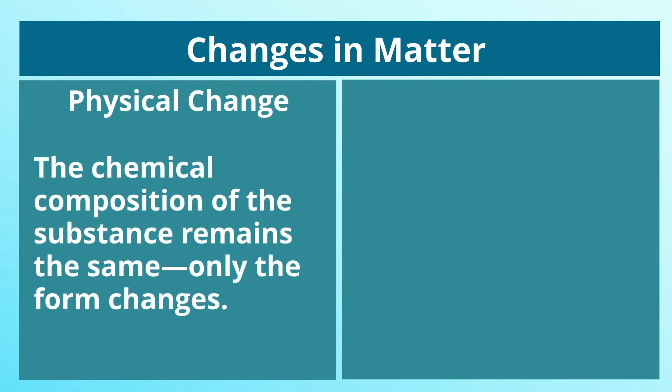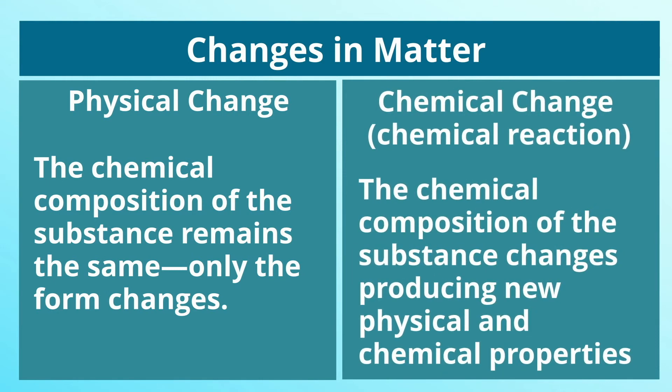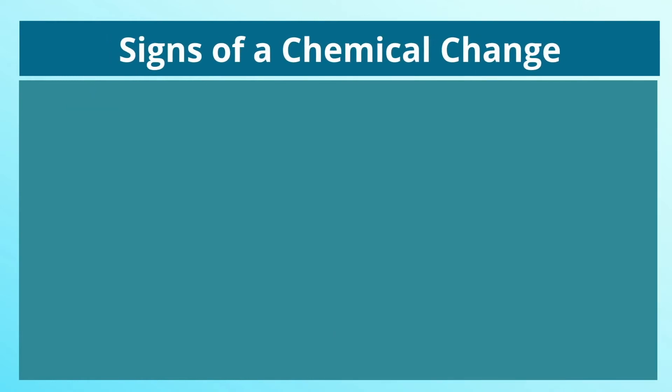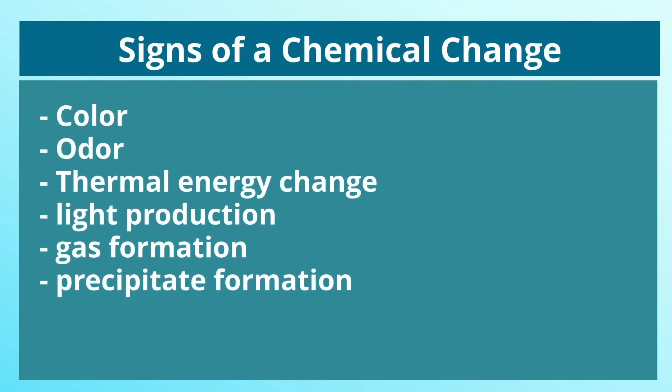Changes in matter. Physical change: the chemical composition of the substance remains the same, only the form changes. In a chemical change or chemical reaction, the chemical composition of the substance changes, producing new physical and chemical properties. Signs of a chemical change: Color, Odor, Thermal energy change, Light production, Gas formation, Precipitate formation.